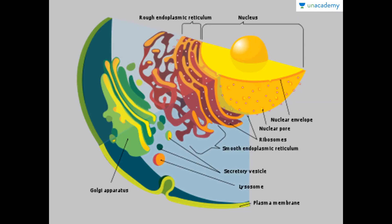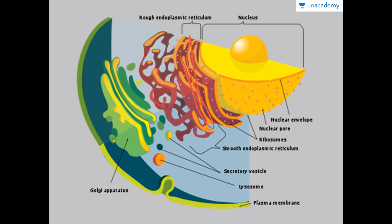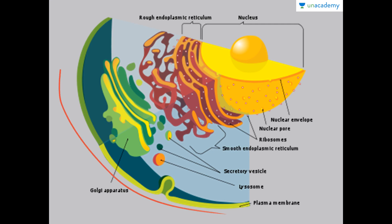Here we have a diagram of the cell showing the endomembrane system. We can see the nucleus, the nucleolus, and the nuclear envelope with nuclear pores clearly visible. Attached to the nuclear envelope we have the rough endoplasmic reticulum, followed by the smooth endoplasmic reticulum. There are secretory vesicles, a lysosome, the Golgi apparatus shown as a big green structure, and the plasma membrane.